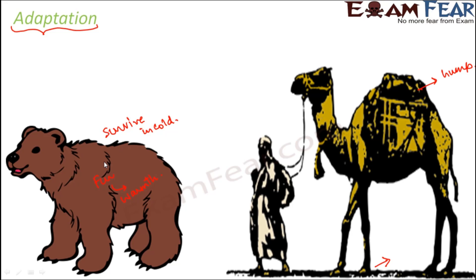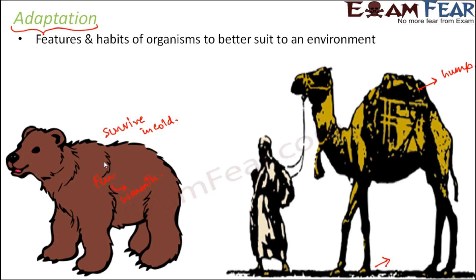Whereas the polar bear is facilitated with all those properties which help it to survive in polar regions where it is extremely cold and always covered with ice. In a very similar way, different organisms are adapted in different ways so that they can live in specific locations. Adaptation refers to the features and habits of organisms to better suit them to an environment — and it is not only about physical appearance but also about the behavior and habits of the organism.